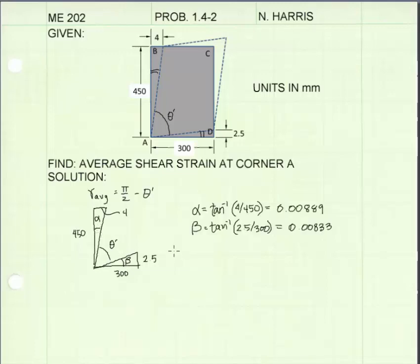I found my values for alpha and beta. Let's look at it. Alpha is equal to the tangent inverse of the opposite side over the adjacent side. The opposite side is 4 millimeters, the adjacent side is 450. So alpha equals 0.00889. I've done the same for beta. The opposite side is 2.5 millimeters, the adjacent side is 300.